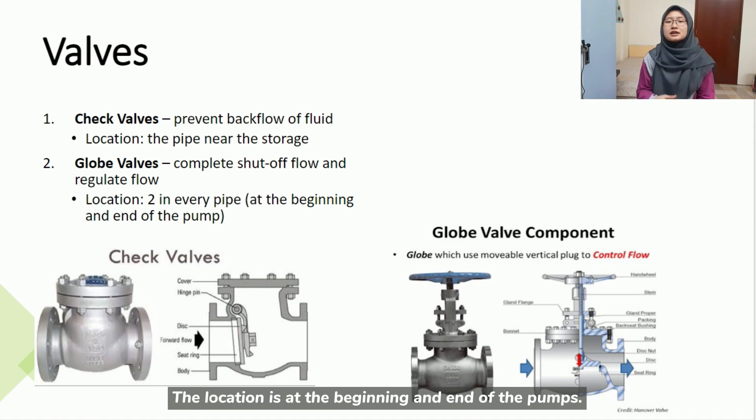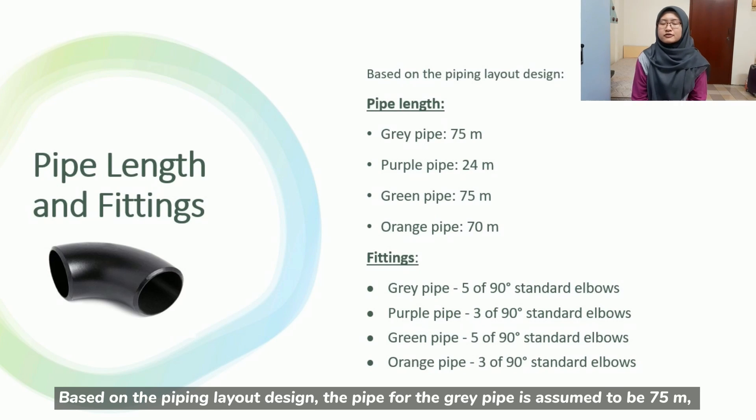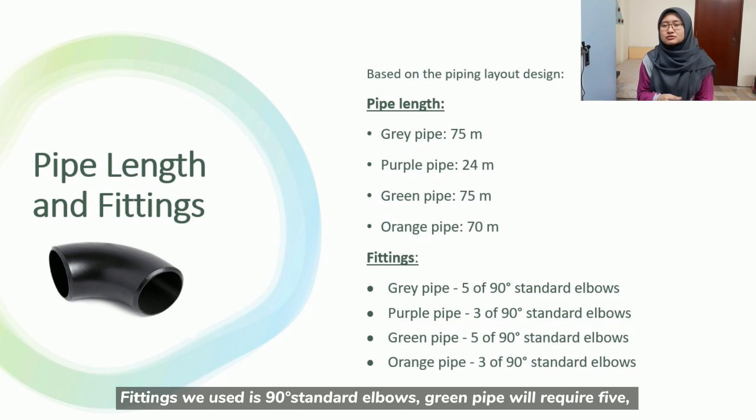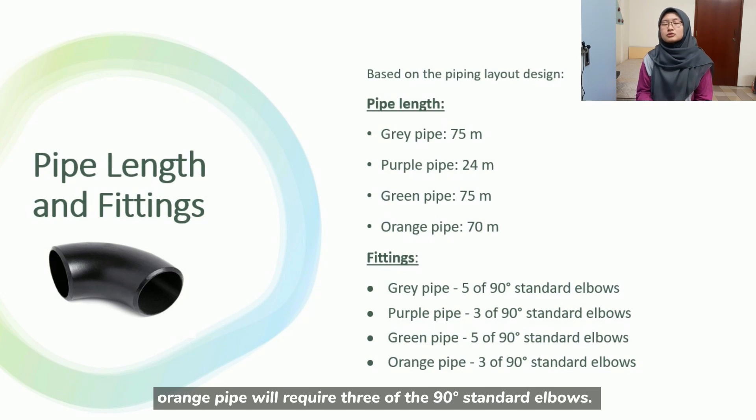Based on the piping layout design, pipe length for the grey pipe is assumed to be 75 meter, purple pipe is 24 meter, green pipe is 75 meter, orange pipe is 70 meter. The fittings we use is 90 degree standard elbows. Grey pipe is 5, purple pipe will require 3, green pipe will require 5, orange pipe will require 3 of the 90 degree standard elbows.